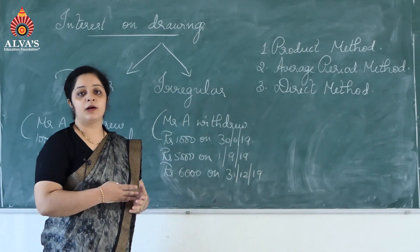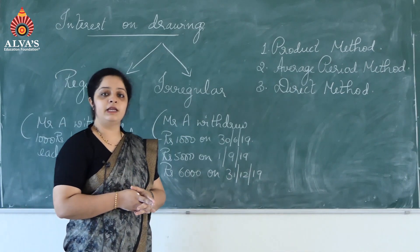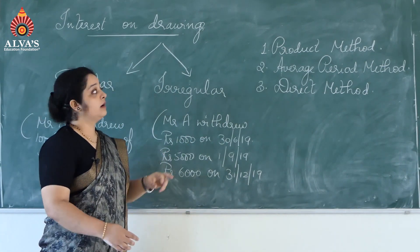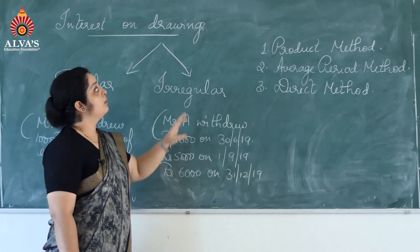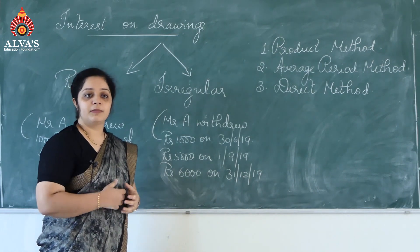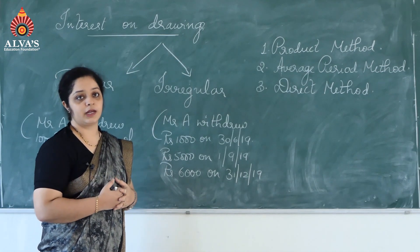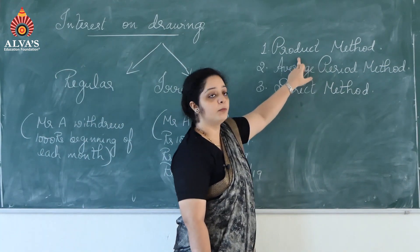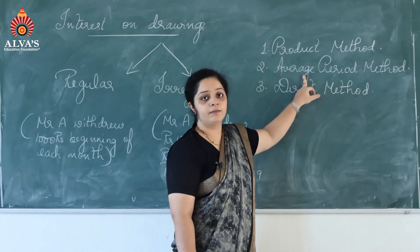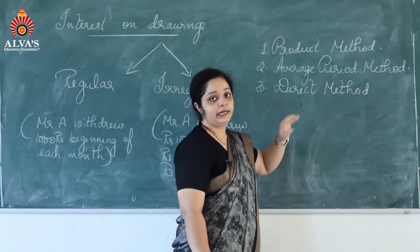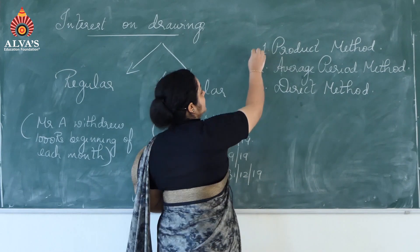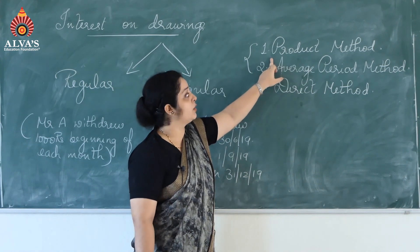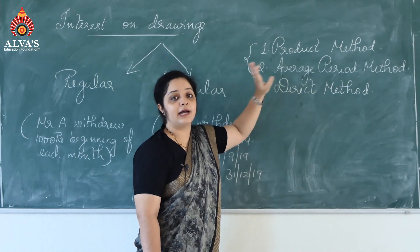Coming back to chapter number two — accounting for partnership basic concepts — till now we have dealt with the basic theory. Now going to the first basic concept included in partnership: calculation of interest on drawing. Drawing is any amount taken by the owner or partner from the business for personal use. In calculating interest on drawing, there are usually three methods: the first is product method, the second is average period method (also called shortcut method), and the third is direct method. For your exam, the first two methods are very important. For six marks, you will usually be asked to calculate interest on drawing under either product method or average period method.